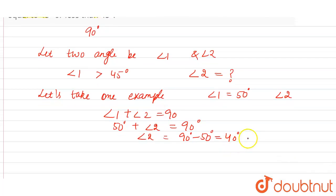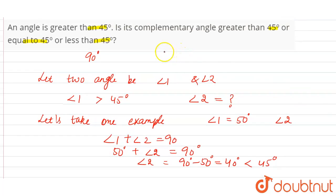Now if you can see, 40 degrees is less than 45 degrees. So this is the case: if one angle is greater than 45, then the other angle should be always less than 45 degrees, and this is the required answer for the given question.